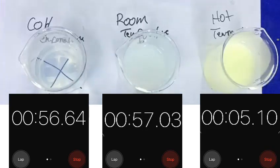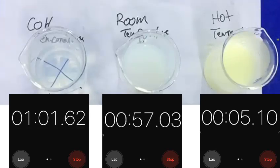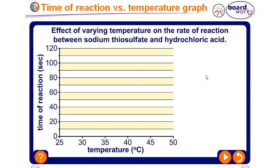The sodium thiosulfate at room temperature started turning cloudy, and we could no longer see the cross under the beaker after 57 seconds. The cold thiosulfate takes even longer. We represent this data on a graph of time versus temperature. The y-axis is time of reaction and the x-axis is temperature. As temperature increases, the time taken for the reaction decreases. For example, at 35°C the time is about 60 seconds, while at 50°C it drops to about 30 seconds.